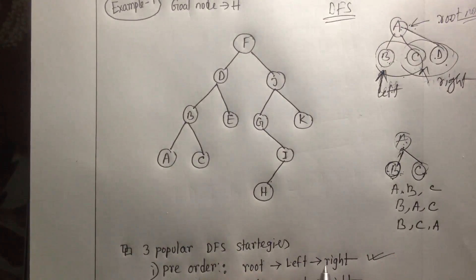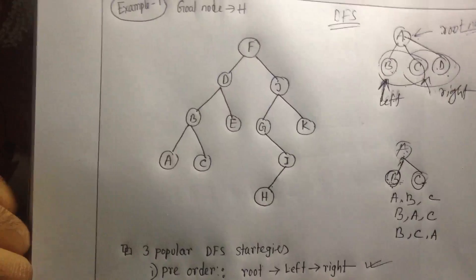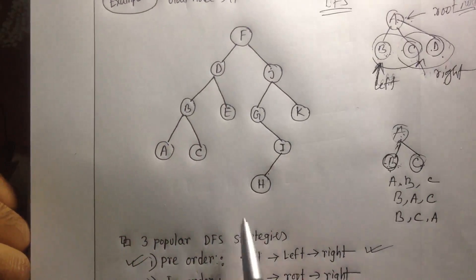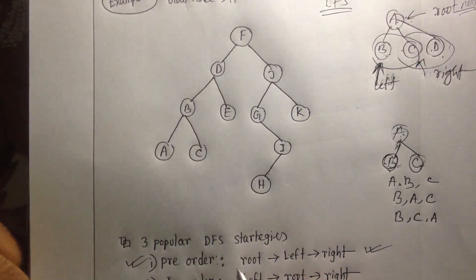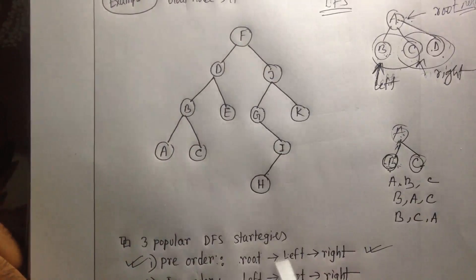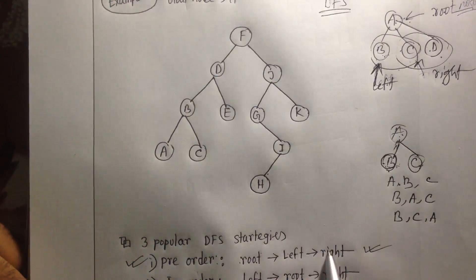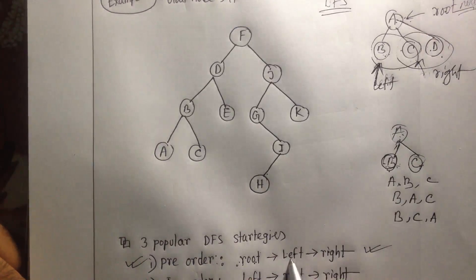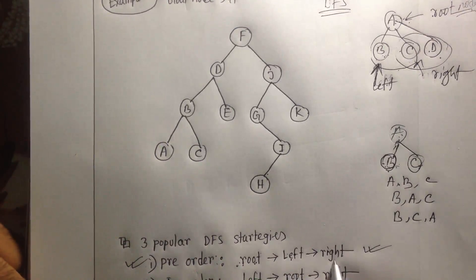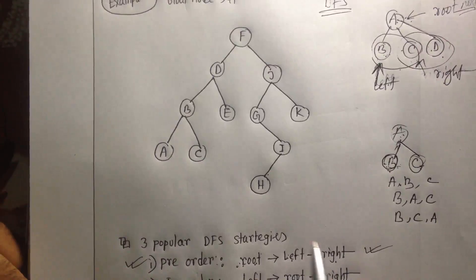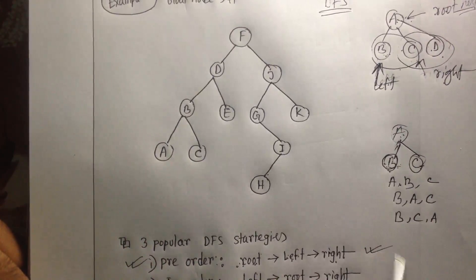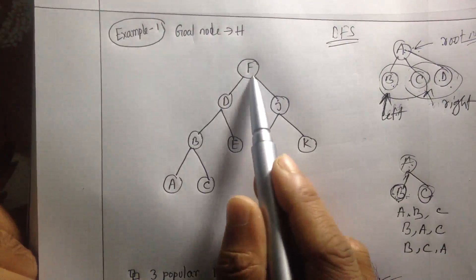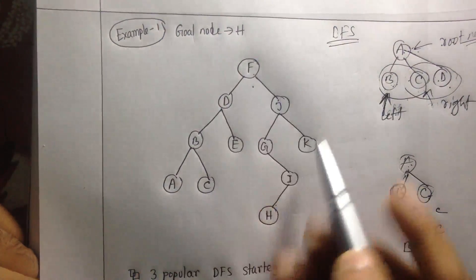I'll be using pre-order strategy because it is easier. You start with the root node, then go to the left, then go to the right — giving priority to root first, then left node, then right node. Remember: root, left, right.